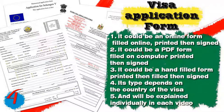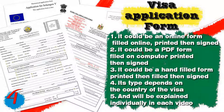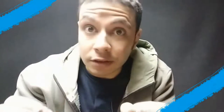Number four, you will need a visa application form. It can be an online form filled out online, then printed and signed; a PDF form filled on a computer, then printed and signed; or a hand-filled printed form that is then signed. The type depends on the country of the visa and will be explained individually.